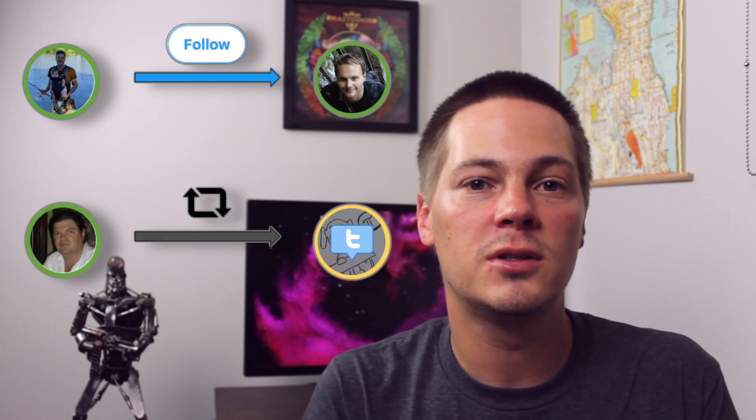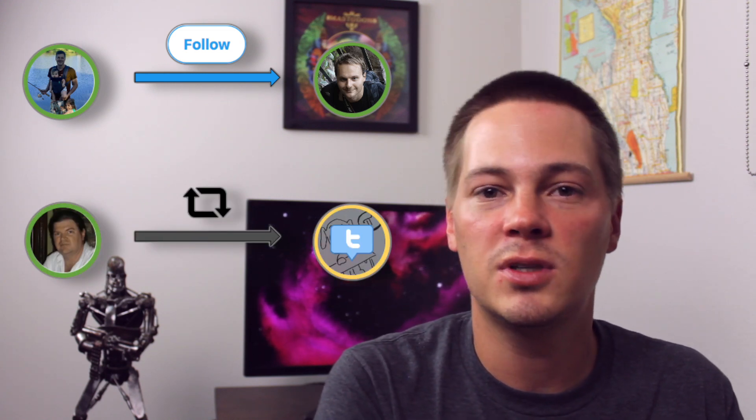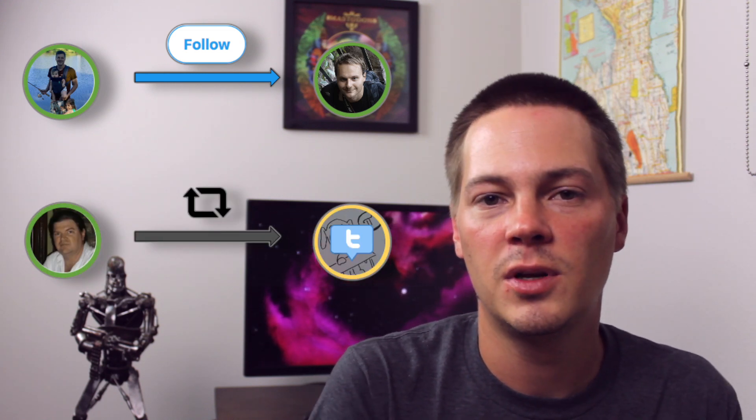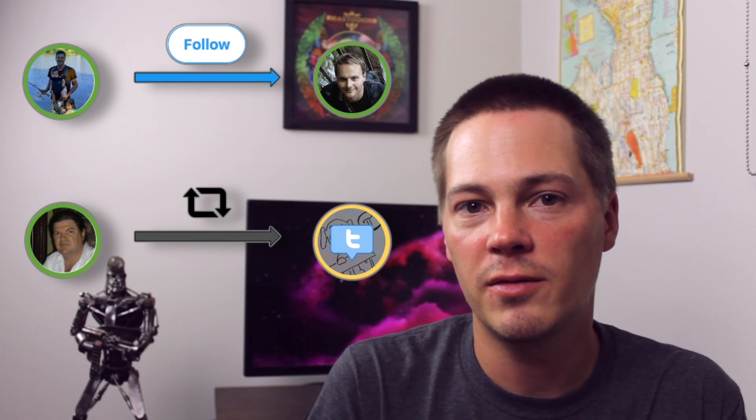So the last thing we need before we get to RGCNs is to talk about knowledge graphs. So a knowledge graph can be thought of as being built by triples, where you have source node, relation type, and destination node. So in the world of Twitter, you might have Zach follows Thomas Kipf. And then you might also have Yann LeCun retweets Yannic Kilcher tweet 127035.